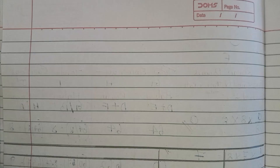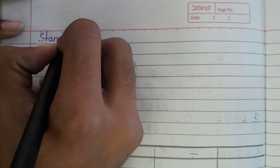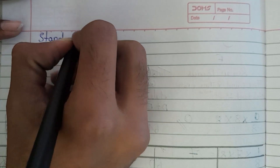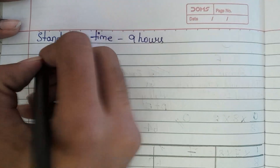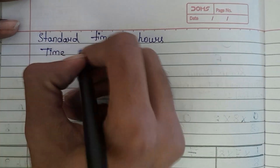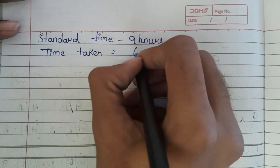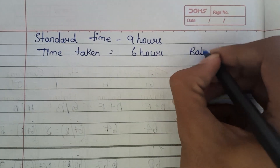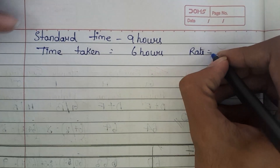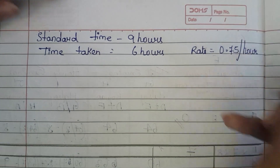Here they have given us standard time. How much is the standard time? Standard time is 9 hours, and the worker has taken 6 hours of actual time. His rate is 75 paisa per hour.